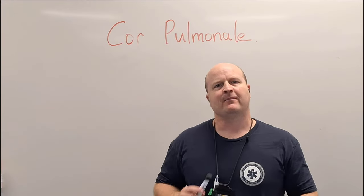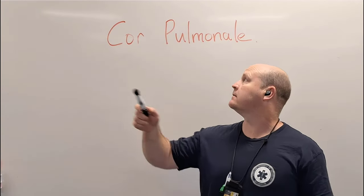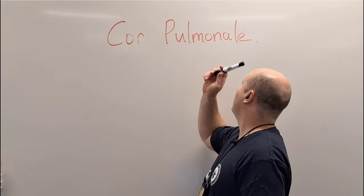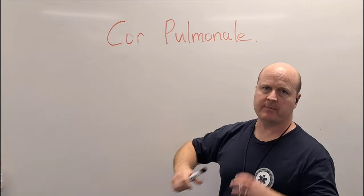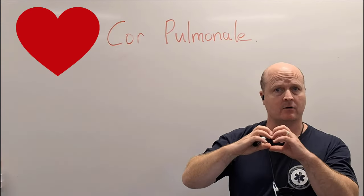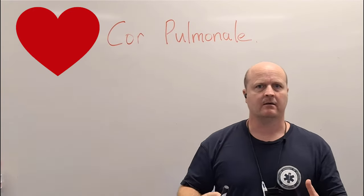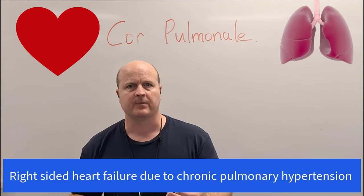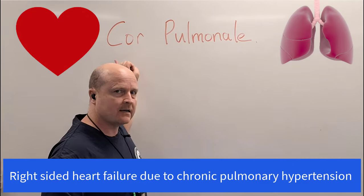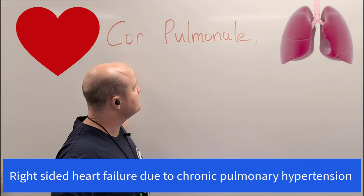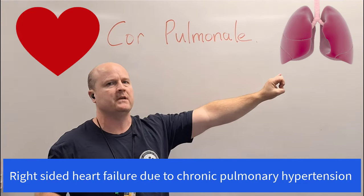Kia ora team, my name's Ben and today we're looking at cor pulmonale. So cor means cardiac or heart, pulmonale — pulmonary means lungs. So what this is, is it's a right-sided heart failure due to pulmonary hypertension.